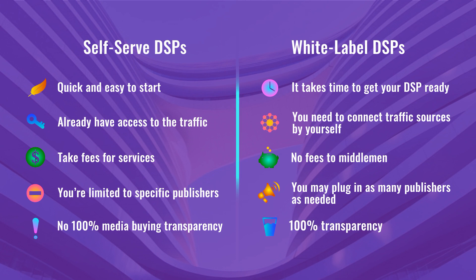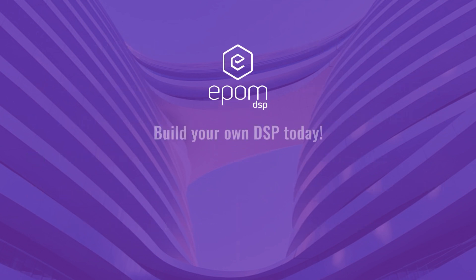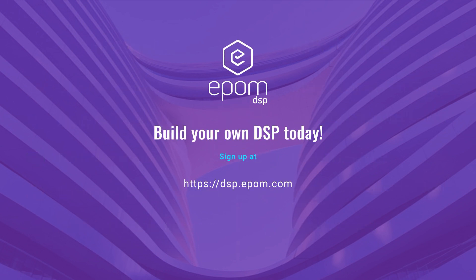All in all, a DSP is a perfect piece of technology for running highly automated ad campaigns. The platform needs only milliseconds to deliver an impression and display ad performance results on a dashboard. Ready to build your own DSP for programmatic advertising? Sign up for a quick demo at epom.com.